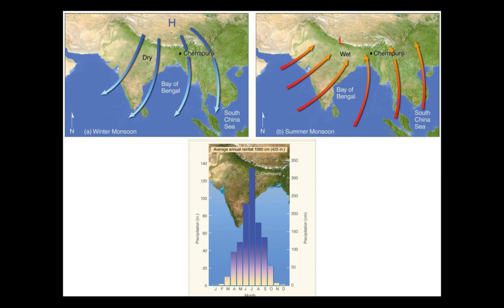In the summer, the air over the continent becomes warmer than the air over the open water. A large, shallow, low-pressure area forms over the continent. Air rises and blows onshore. The rising onshore flow in the summer allows deep, precipitating clouds to form. Therefore, summer is the wet season.